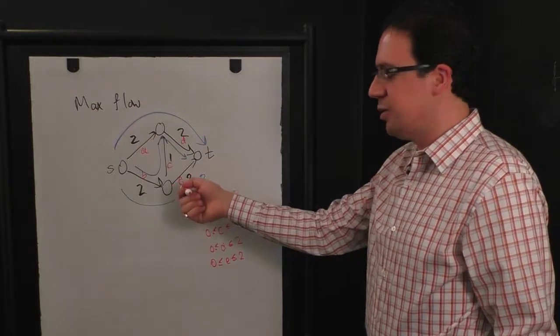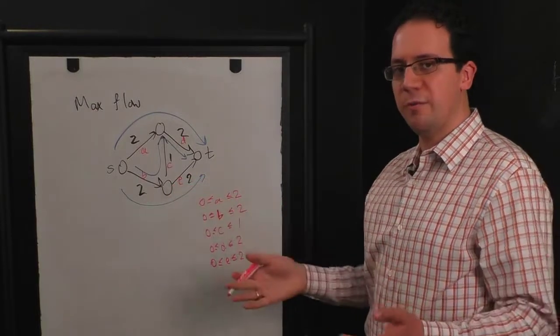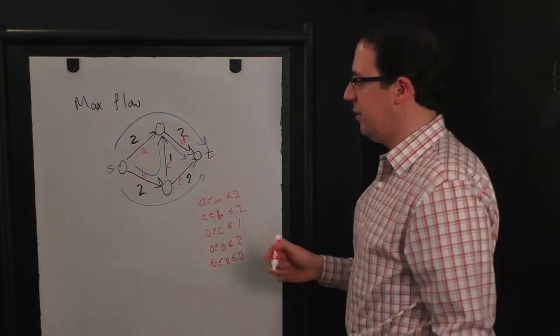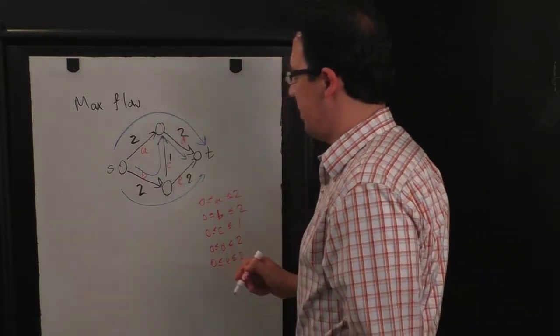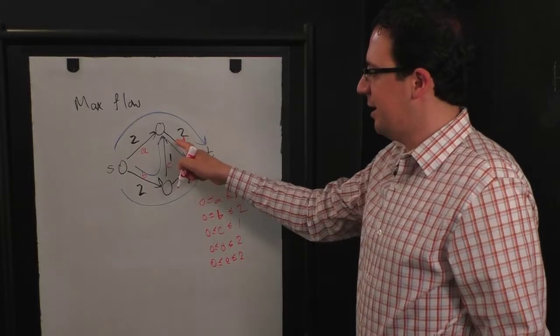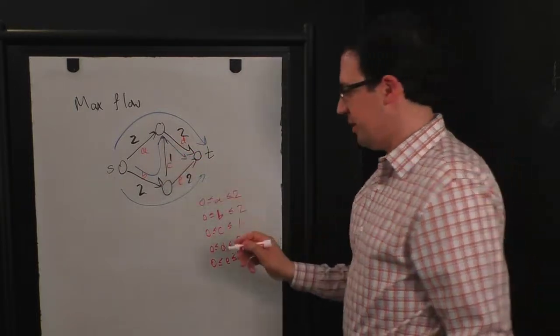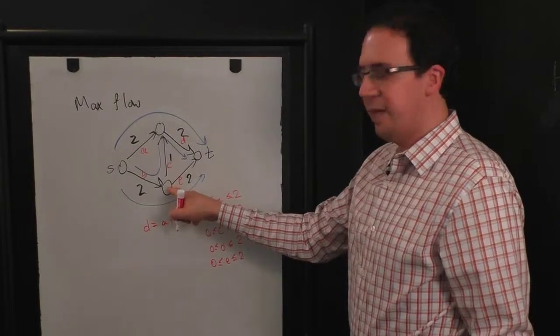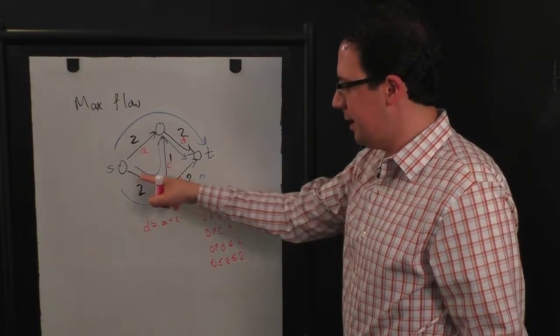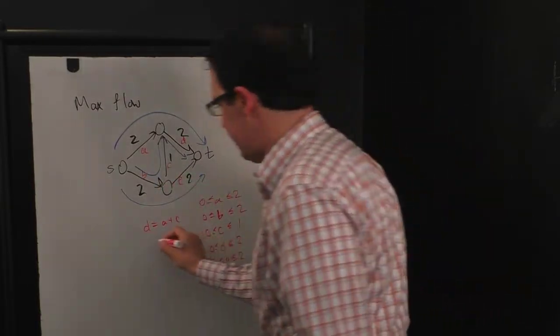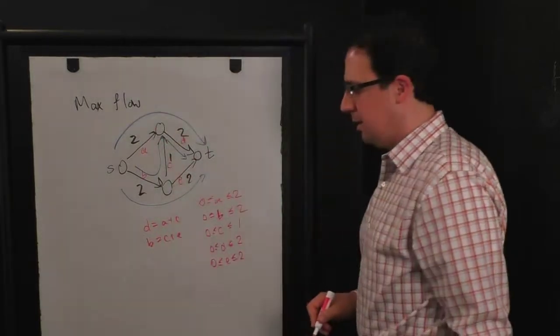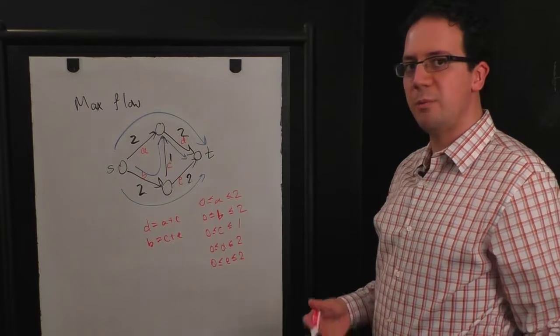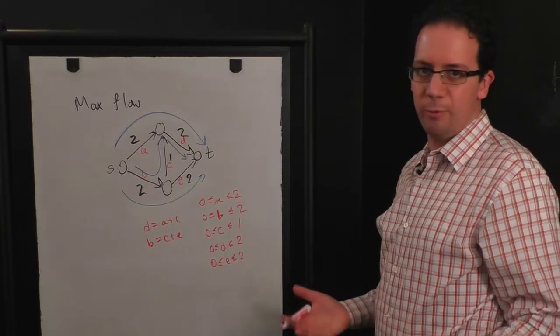And we also have constraints at each node. When water flows through pipes, the water coming into a node has to be the same as the water going out of a node. So at this node, we get the constraint that D must be equal to A plus C. And at this node, we get the constraint that B, the incoming flow, must be equal to C plus E.